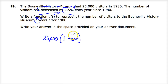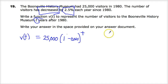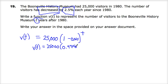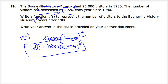So combining these two together — and it's exponential, so what's the exponent? The number of years. They tell me to write a function v of t for the number of years, so v of t equals 25,000 times 1 minus 0.025, which gives me 25,000 times 0.975, raised to the t power.